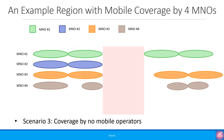The third scenario, which is the most dangerous scenario, is where there is no coverage by any operator. Here, none of the devices will be able to initiate an emergency call as there is no coverage by any of the operators. The regulators in most countries try their best not to have areas where there is no coverage by any of the operators.